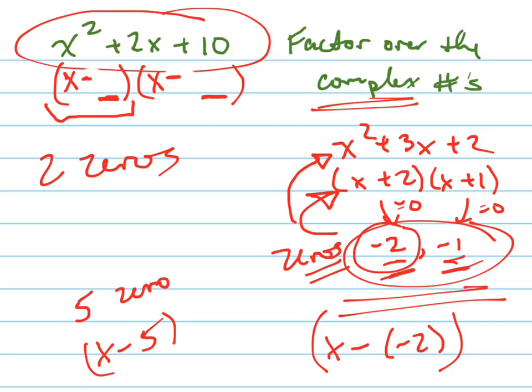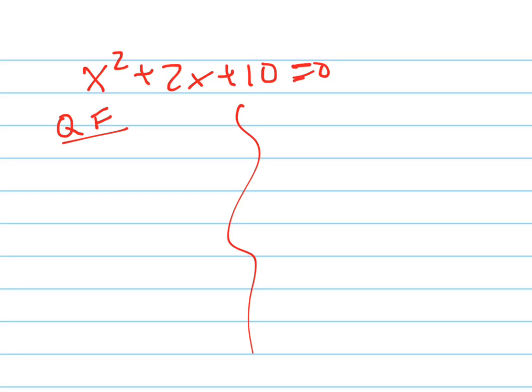And so we're going to find our zeros, our complex zeros of this green equation up here, and then we're going to plug them into that right there. So let's do this. I'll do this on the next page. So here we go. x² + 2x + 10. I'm going to show you the two ways you can do this. The first way is with the quadratic formula.